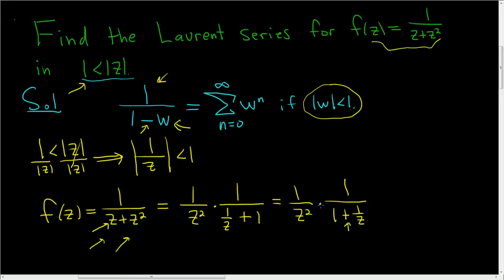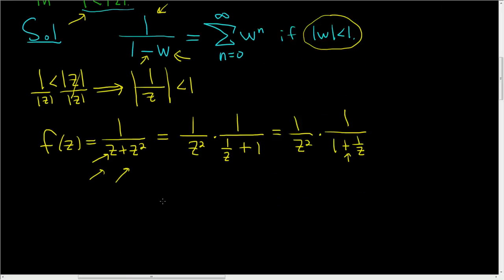But we can easily turn this into a minus sign by writing it as follows. This is 1 over z squared times 1 over 1 minus negative 1 over z. And now we can use the formula, right? This here is our w in the formula.